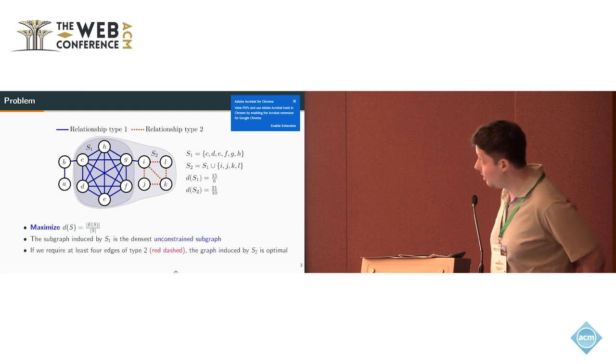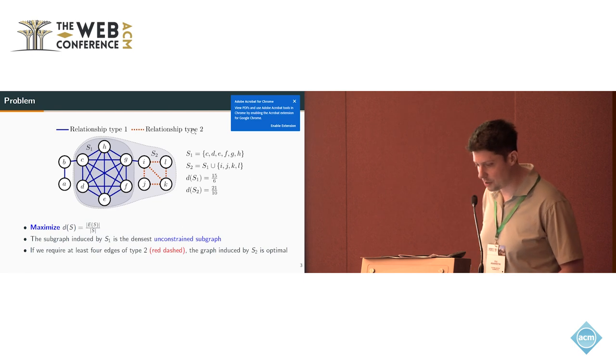However, if we require to have at least four edges of the relationship type 2, then the optimal solution is the second one, including these nodes I, J, L, and K. We are interested in finding denser subgraphs with such constraints on the number of colors of the edges.